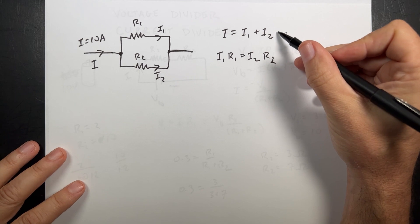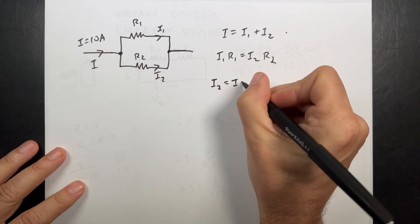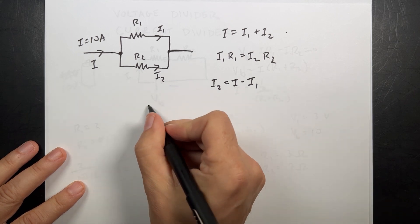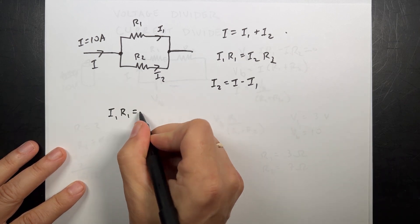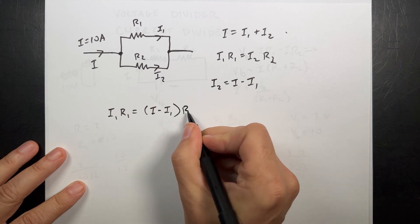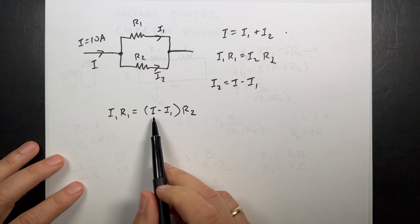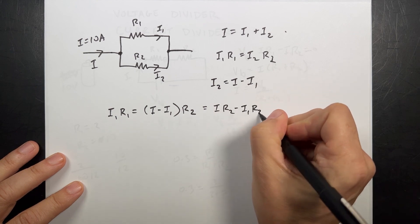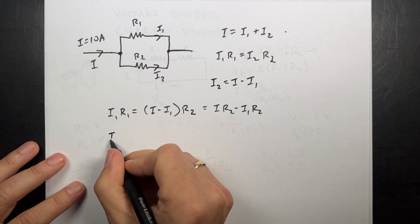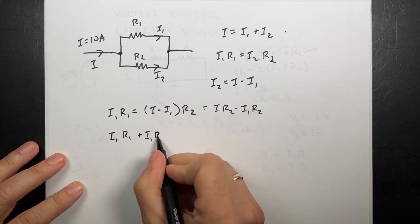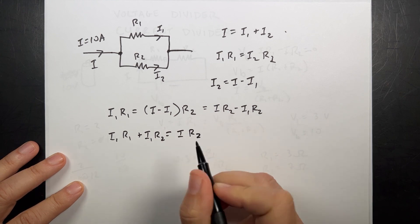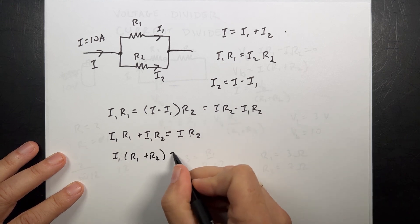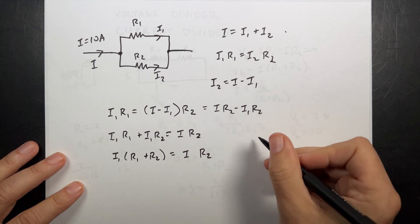Now I'm going to solve this for I2. So I2 equals I minus I1. And I want to solve for I1. So let's multiply this out. I get I R2 minus I1 R2. I'm going to add this to both sides and I get I1 R1 plus I1 R2 equals I R2. I can factor out the I1. I1 R1 plus R2 is I R2. And then I can divide both sides by that and I get my answer.